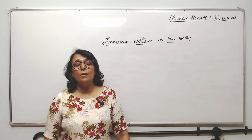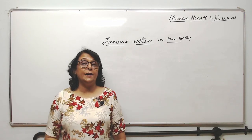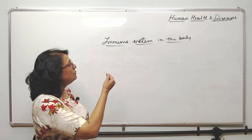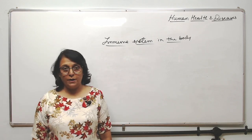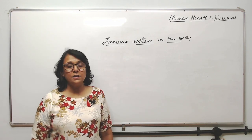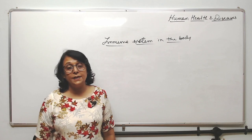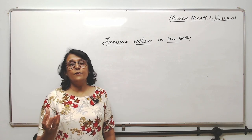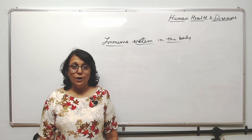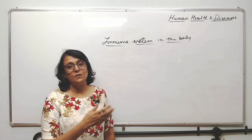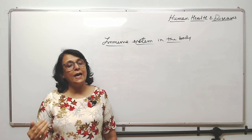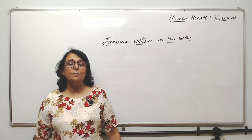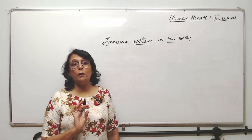We have been talking about immunity in general. Now what exactly is this immune system in our body? We know there are cells — B cells and T cells. Now where are they formed? They are formed in the bone marrow. Their specialization takes place in thymus and other lymphoid tissue. That means our immune system comprises of lymphoid tissue.